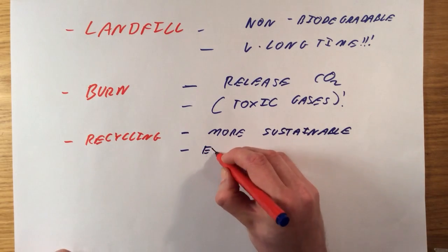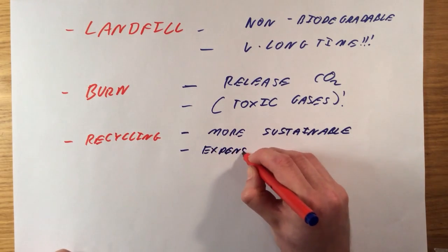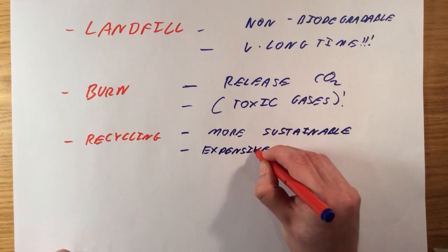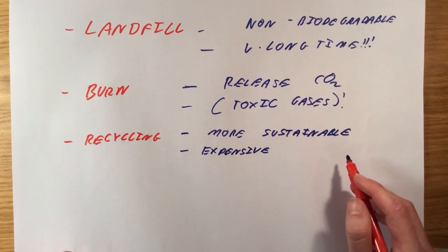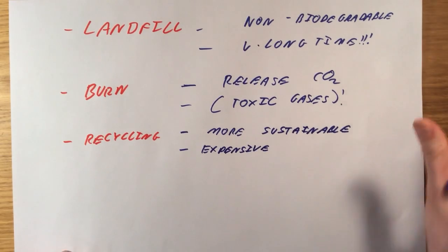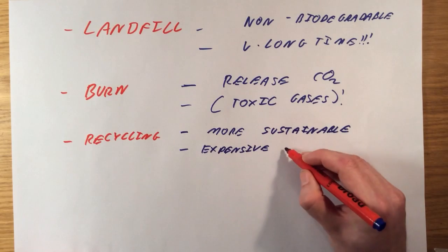However, it can be very expensive because you have to sort each polymer out into individual groups. You have to separate all of the polyethene from all of the polystyrene, from all of the polyvinyl chloride. So it can be very expensive to sort the plastics.